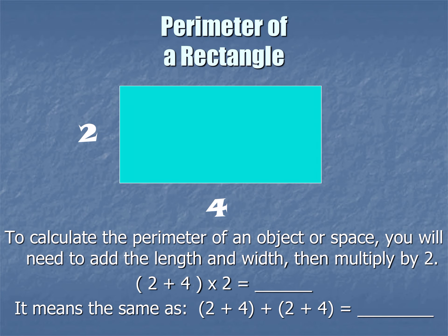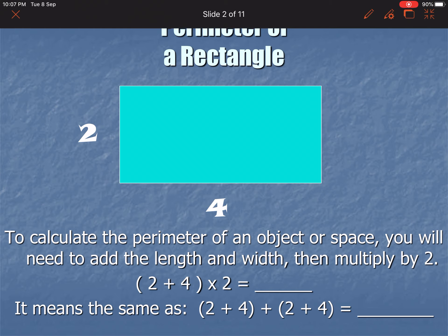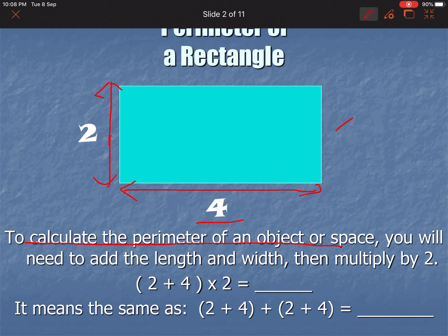First, Parameter of a Rectangle. Here you can see a rectangle is given, and it has length equals to 4 and width equals to 2 — centimeter or meter, whatever is given in the question. To calculate the parameter of a shape, you will need to add the length and width, then multiply by 2.